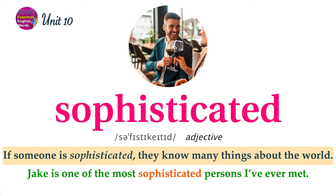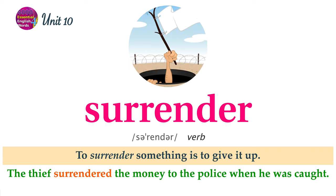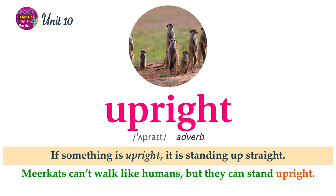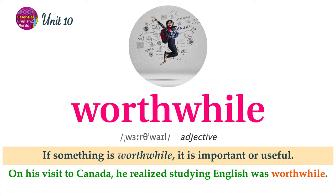If someone is sophisticated, they know many things about the world. Jake is one of the most sophisticated persons I've ever met. To surrender something is to give it up. The thief surrendered the money to the police when he was caught. If something is upright, it is standing up straight. Meerkats can't walk like humans, but they can stand upright. If something is worthwhile, it is important or useful. On his visit to Canada, he realized studying English was worthwhile.